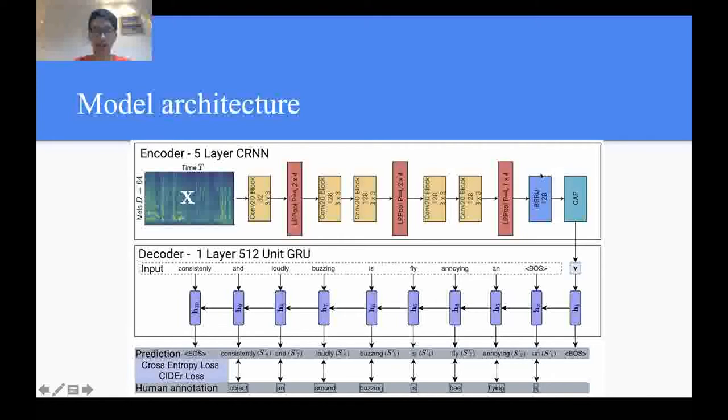CNN layers are expected to extract general audio tagging information, while the bidirectional GRU is added to enhance the model's ability to localize sound events. Finally, we use a global average pooling layer, or GAP here, to remove the time variability. The input to the system is a log mel spectrogram, X, with 64 mel bands.